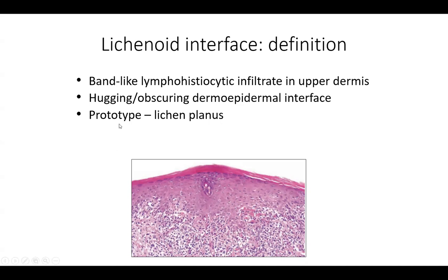The prototype for lichenoid interface is lichen planus. This picture could be lichen planus: you have hyperorthokeratosis overlying it, a wedge-shaped hypergranulosis, some sawtooth rete ridges, and a nice dense band-like lymphocytic infiltrate.